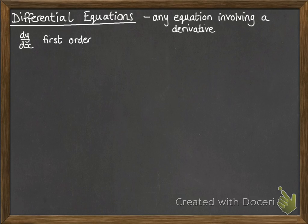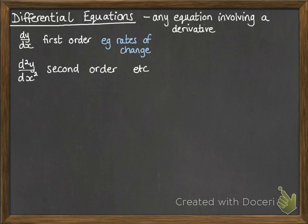So dy by dx would mean that it was a first-order differential equation. If you were using d²y dx squared, it would be second-order, and so on. The dy by dx, we've used that before in rates of change. Those are types of differential equations. They're of the first-order type.